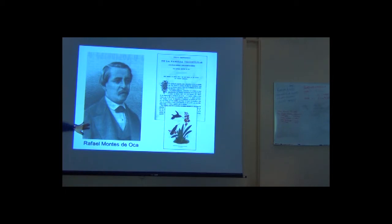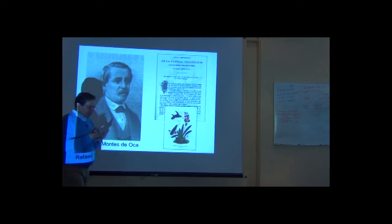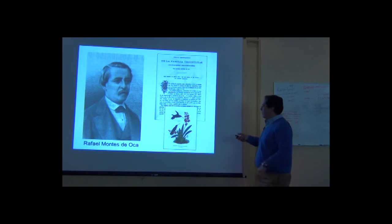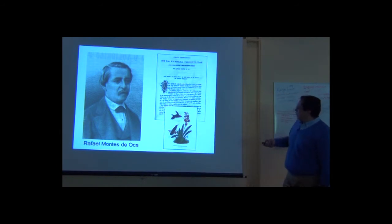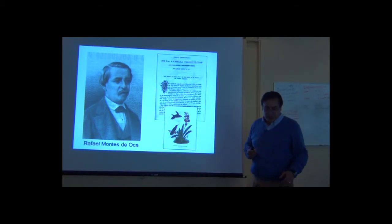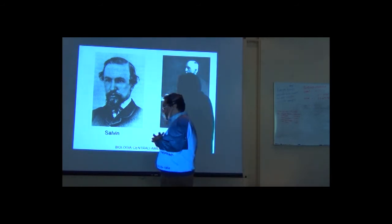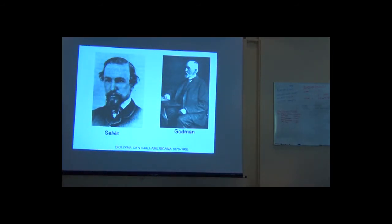What's the next historical pattern? I'm going fast on this because these are general patterns. Mexican science began to be productive until the second half of the 19th century when the first society of natural history was produced. That's the time we have people like Montezoca. He was a naturalist, he was a painter also. He was able to produce data also on the distribution and taxonomy of hummingbirds.